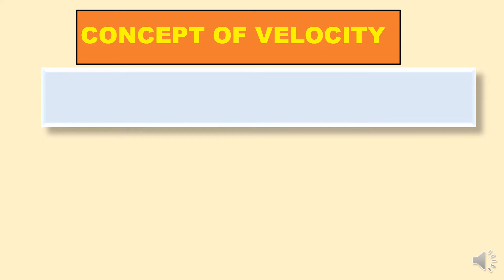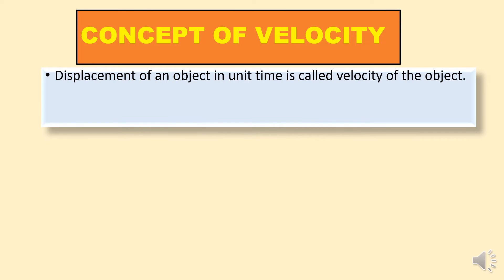Now we need to understand first of all what is velocity. If you have learned speed and understood it, then it would be very easy for you to understand velocity. In speed, speed is equal to distance upon time. Now in velocity, velocity is the displacement of the object in unit time — that is called the velocity of the object.